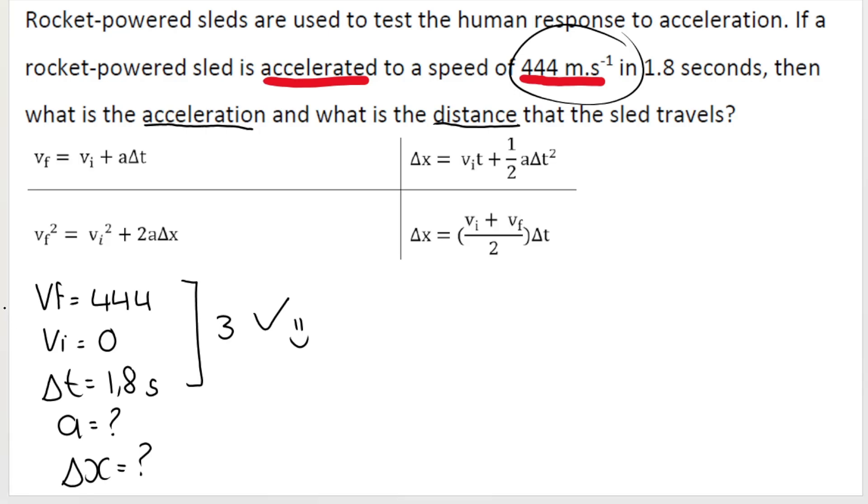So again, I'm going to try and pick a formula where I get the answer in one go. So I'm looking for acceleration. I've got VF. I've got VI. And I've got time. This one looks like a pretty good option. That's the one I'm going to go for. So you write your blank formula first, your naked formula, your empty formula. Because as you know, that always gets you a mark. Then you substitute. In the place of VF, I've got 444. In the place of VI, I've got zero. Acceleration is what I'm looking for. And time is 1.8 seconds. So acceleration is 246.67 meters per second squared.